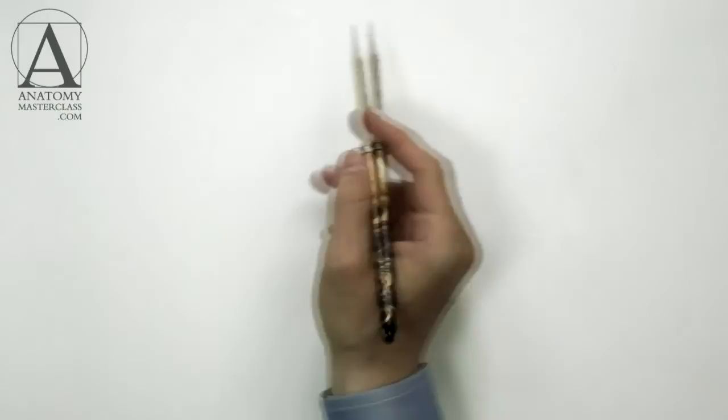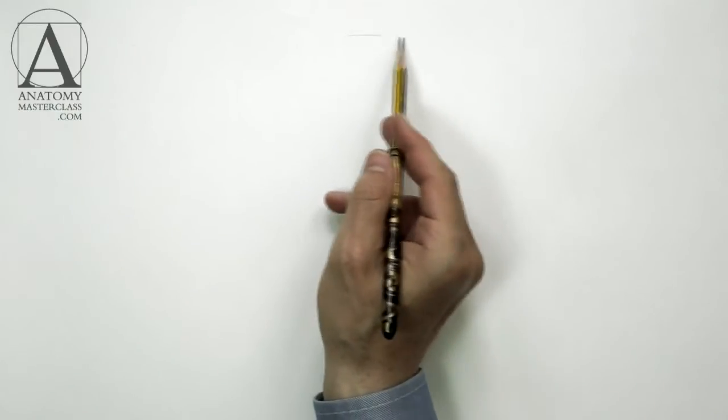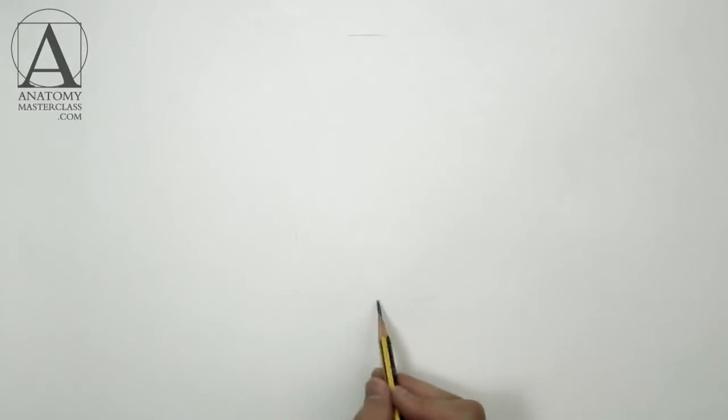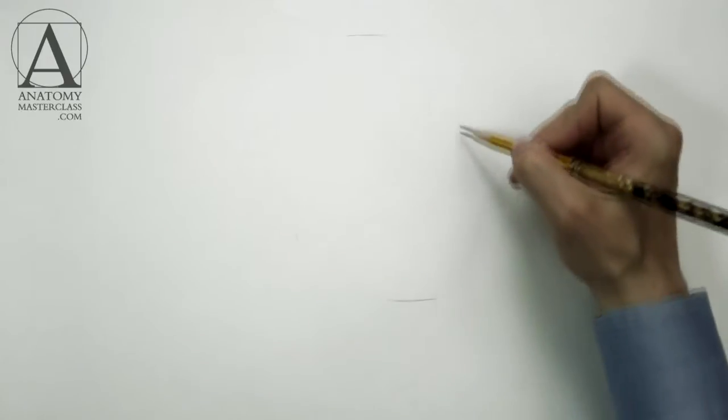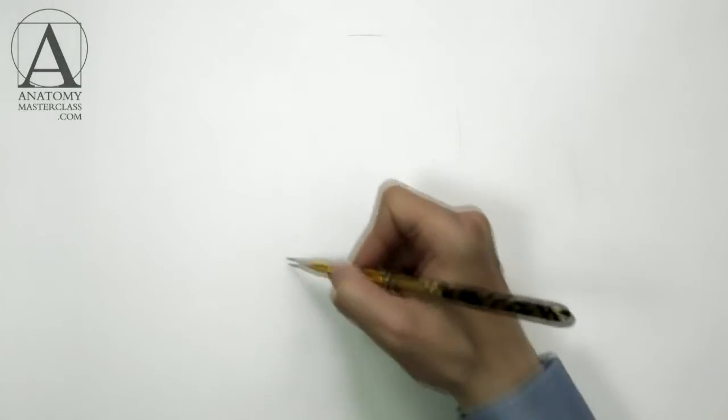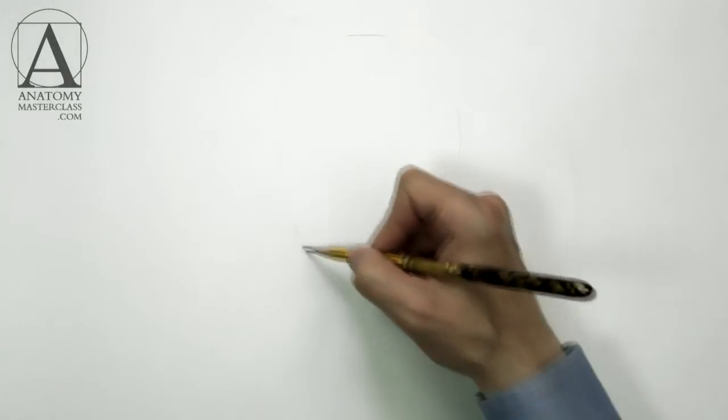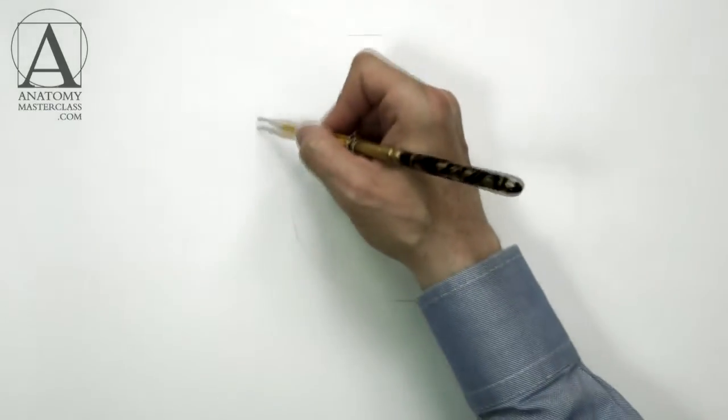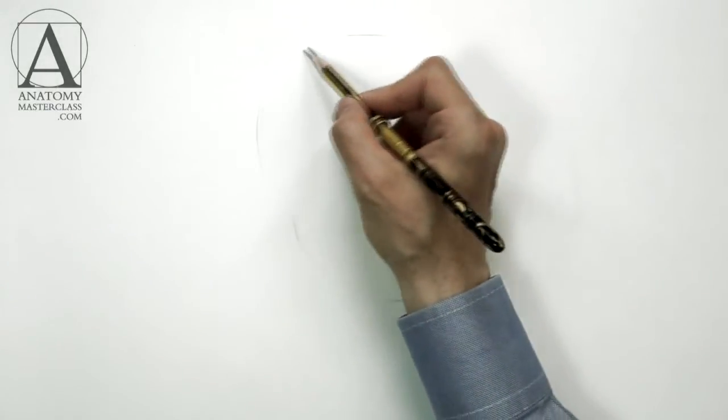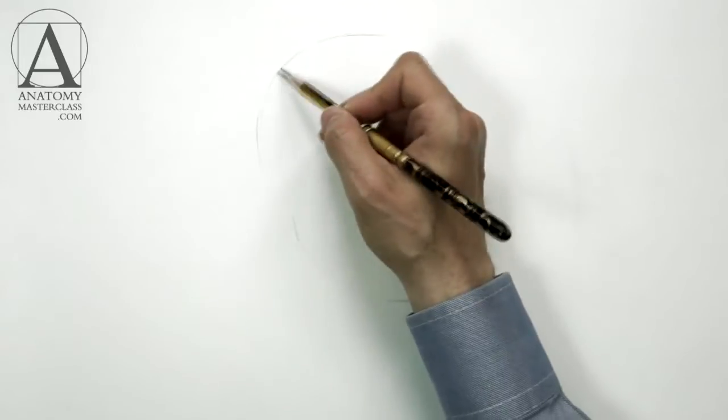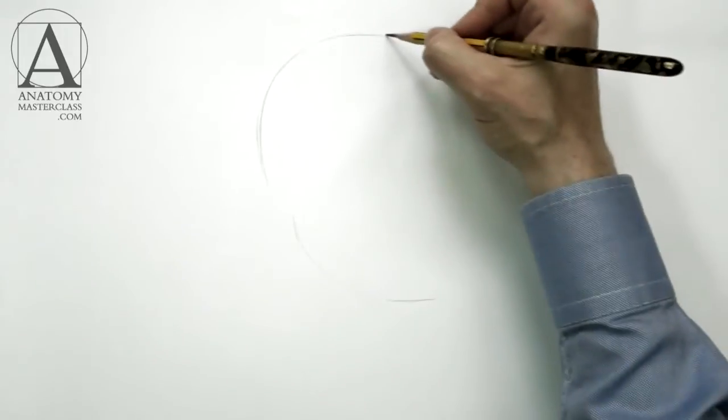By now, you have a basic overview of the anatomy of the human head. It is time to practice this knowledge and build a constructive drawing of the human head. We are drawing a three-quarter portrait using the marble bust of the Emperor Antonius Pius as a model.